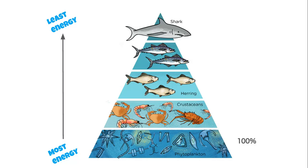Producers have the most energy out of the ecosystem because they create the energy — they have 100% of the available energy. Following the 10% rule, that means primary consumers get 10% of energy available to them, secondary consumers get 1%, tertiary gets 0.1%, and the quaternary level only has 0.01% of energy available to them.